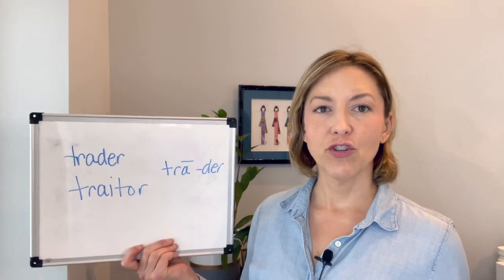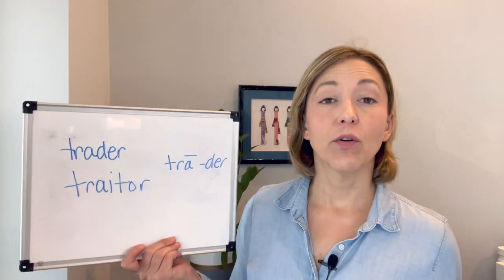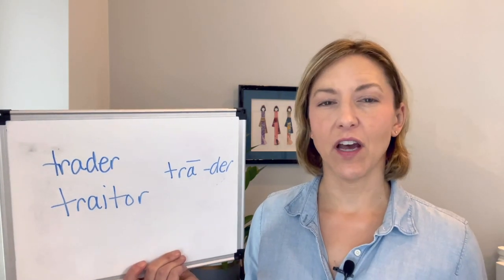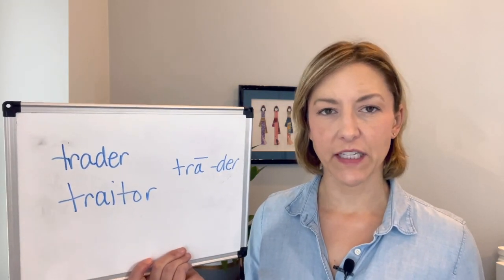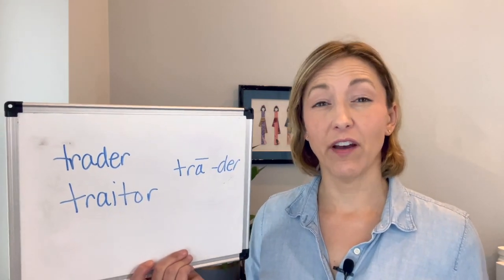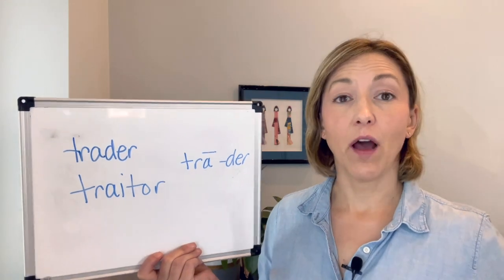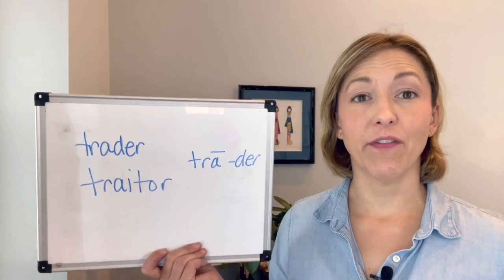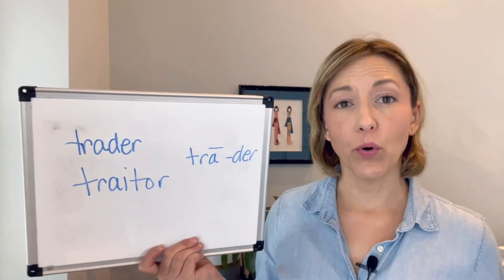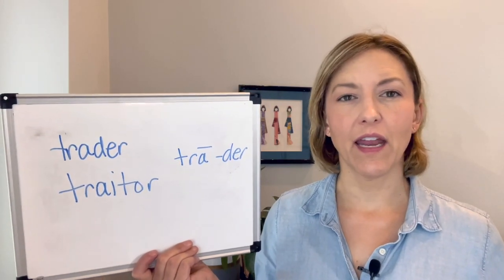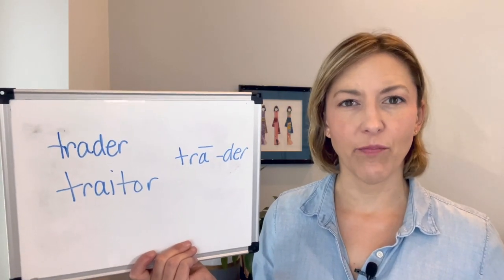We're going to start with that 'tr' sound — this is a little bit tricky so let's break it down. Start with the T sound by touching the tip of your tongue to the back of your top front teeth, then move directly to the R sound. You can either flip the tip of your tongue back away from your teeth or point it down to the bottom of the mouth, with the back of the tongue pulled up. Have your lips ready in a square, tense shape for that R as soon as you start the word.